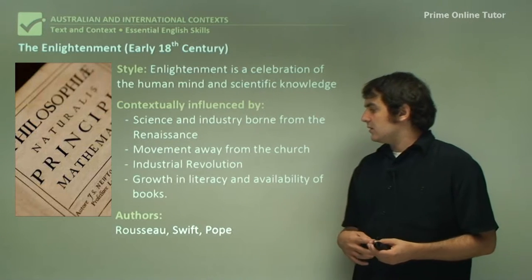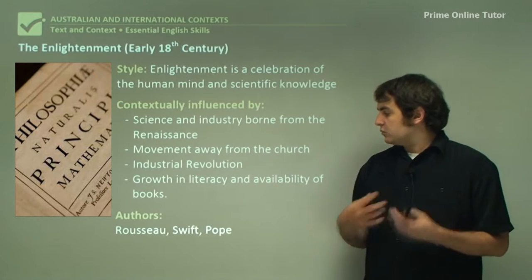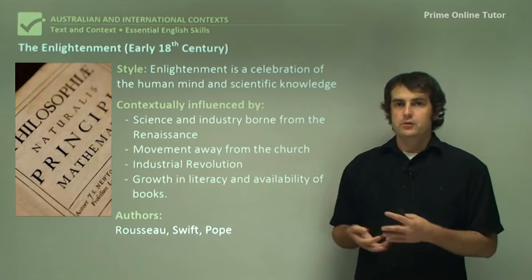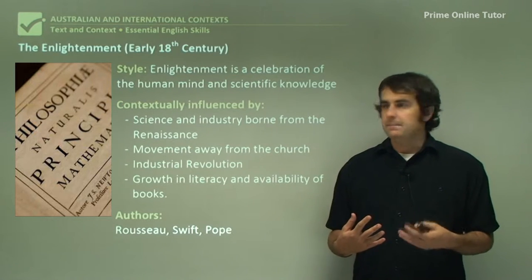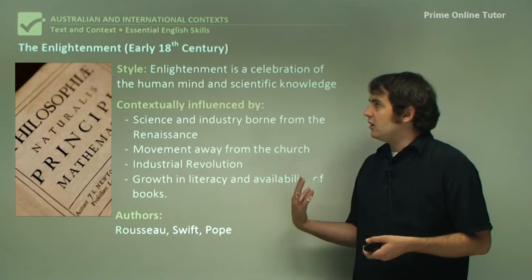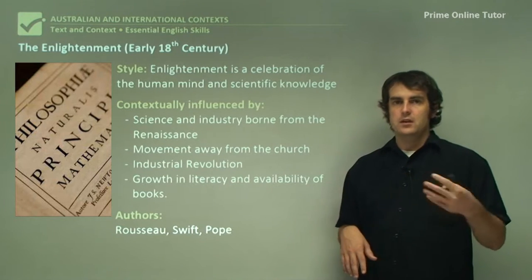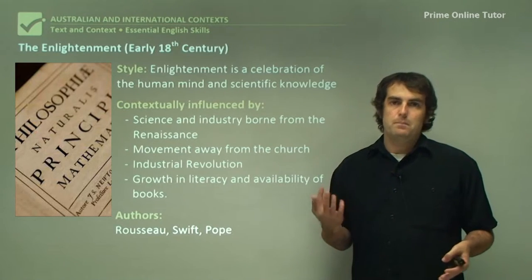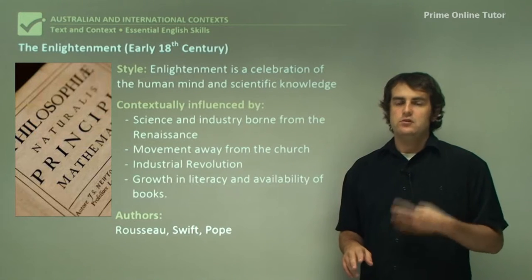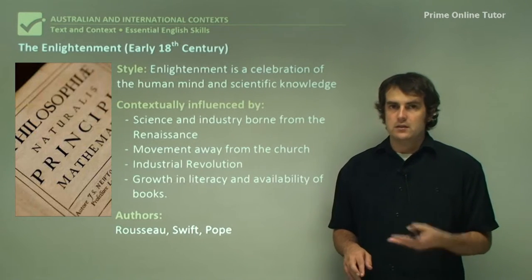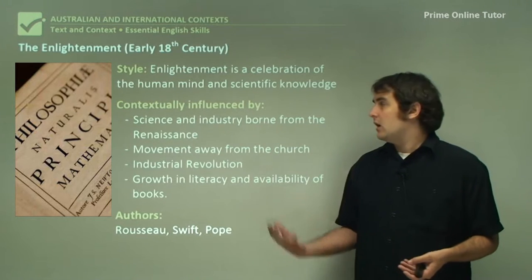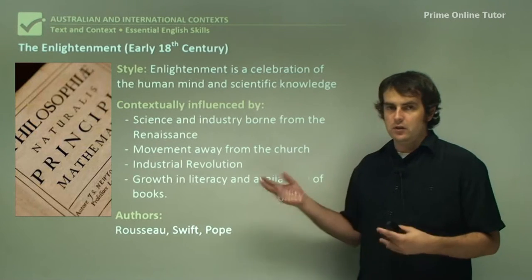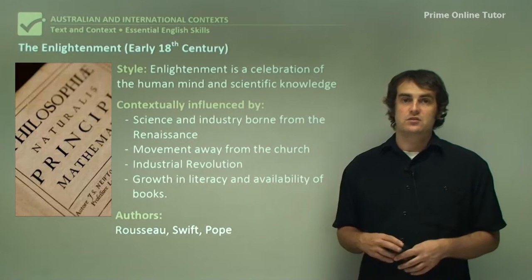Authors at this time include Rousseau, Swift, and Pope, among others. Most writers were concerned with building scientific knowledge, incorporating literature into that. The movement was particularly important for what was to come — feeding new technology and paving the way for more writers after this point. A lot of romanticists, the movement that comes next, would actually refer to the Enlightenment as a source of inspiration, even if only to rebel against it.